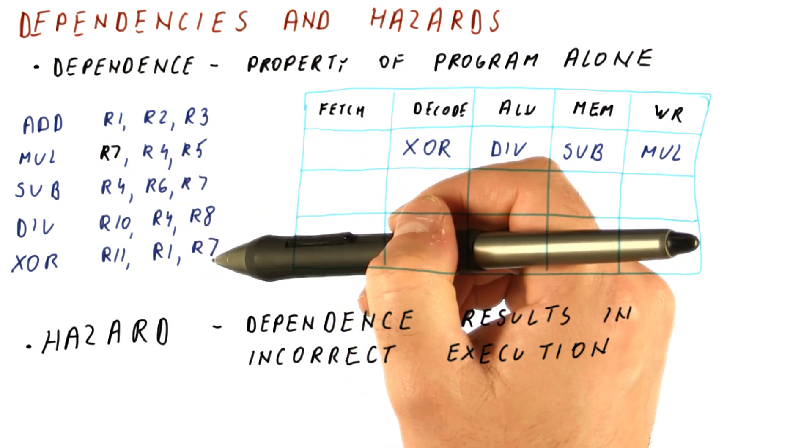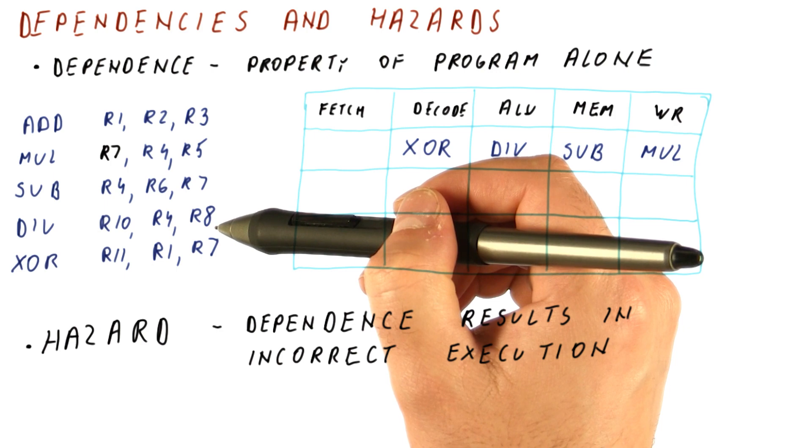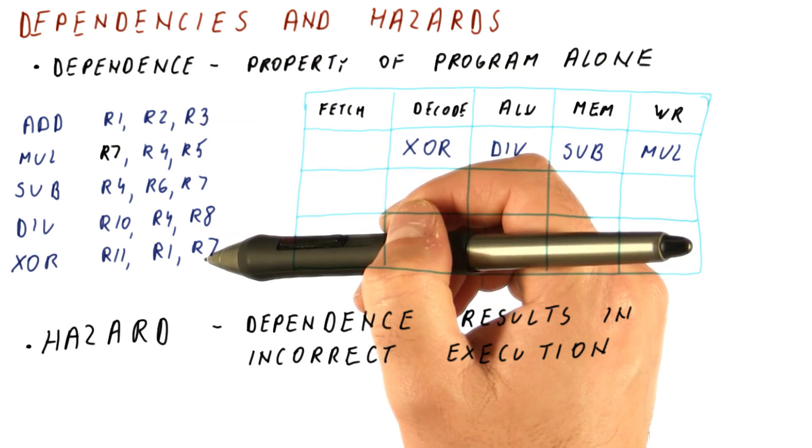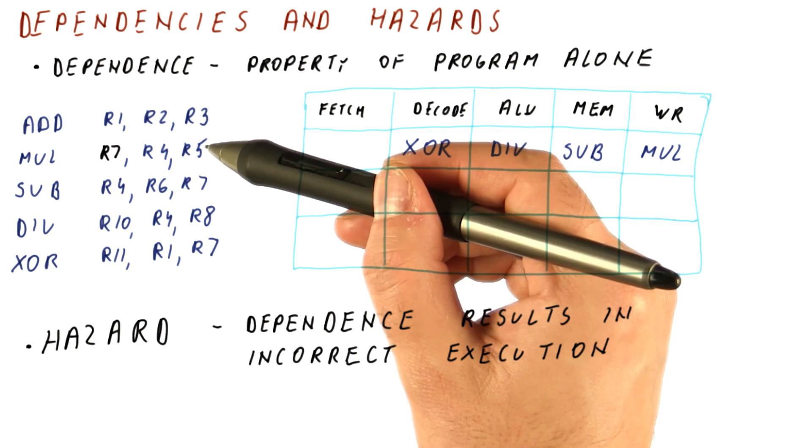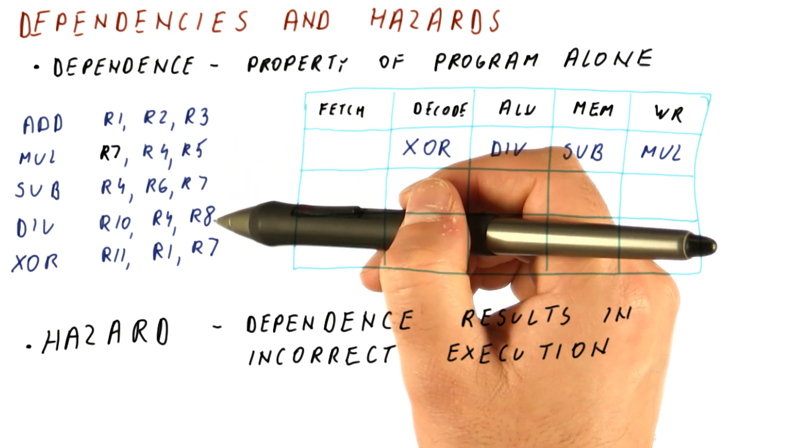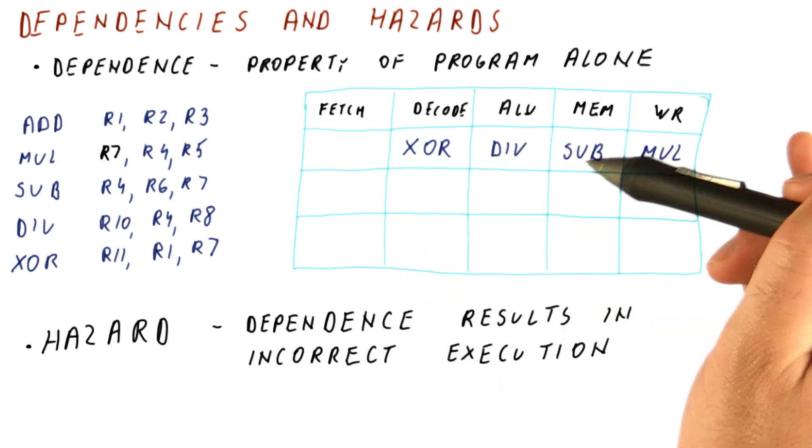But it is a hazard if there are fewer than three instructions between them. In this case, there are only two instructions in between, and that's why we still have a hazard.